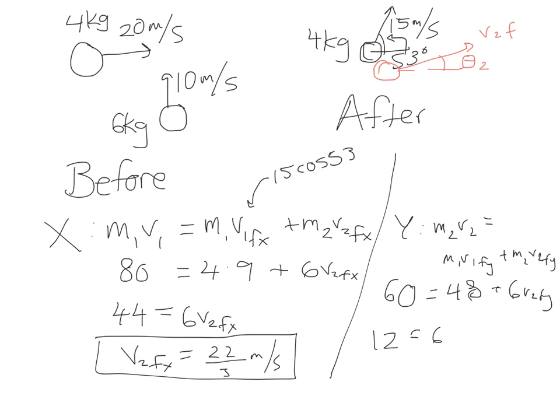So 12 equals 6 v2 final y, that means v2 final y is 2 meters per second. So to sum it all up, what we just determined is that the 6 kg object after the collision is going to have a horizontal component of 7.33 meters per second, so 22 thirds i or 7.33 i, and a vertical component or y component of 2 j.